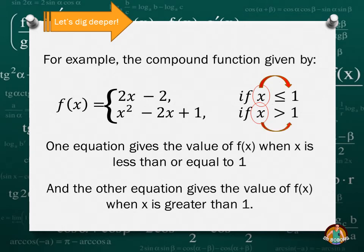One equation gives the value of f(x) when x is less than or equal to 1, while the other equation gives the value of x when x is greater than 1. As you notice, there are two conditions: x is less than or equal to 1 and x is greater than 1. That is an example of a compound function or piecewise function.